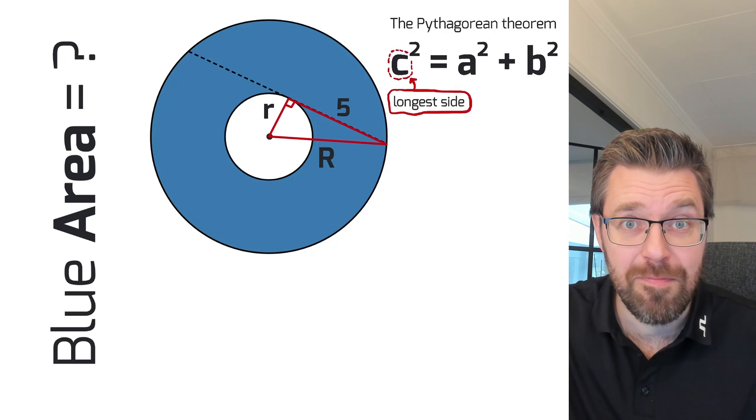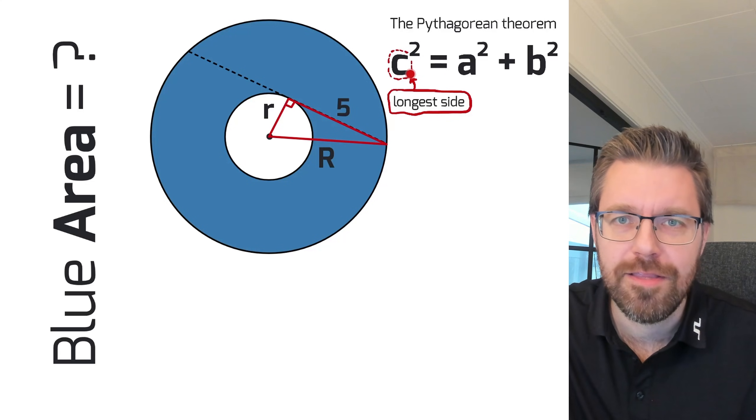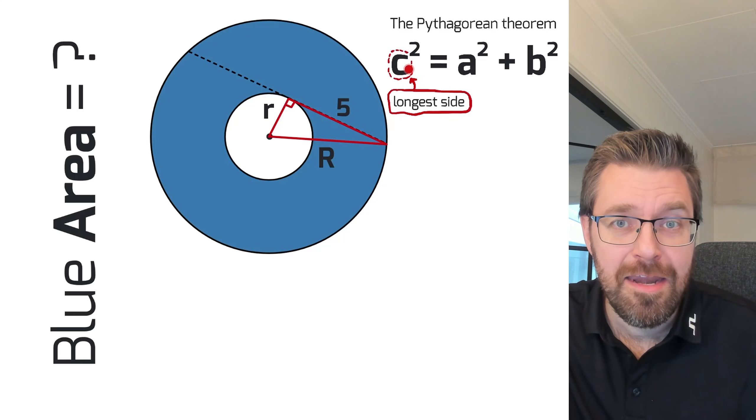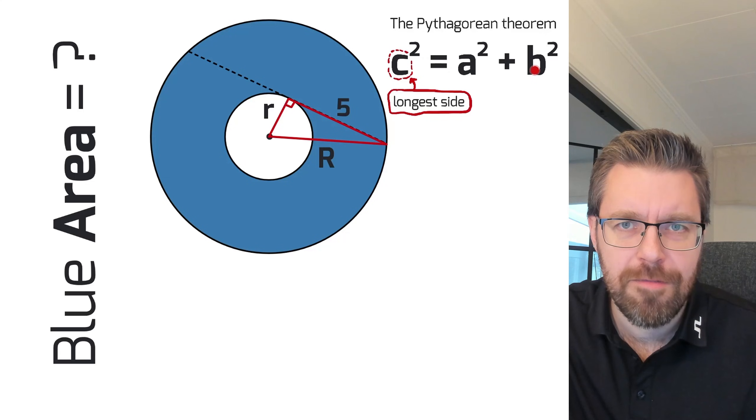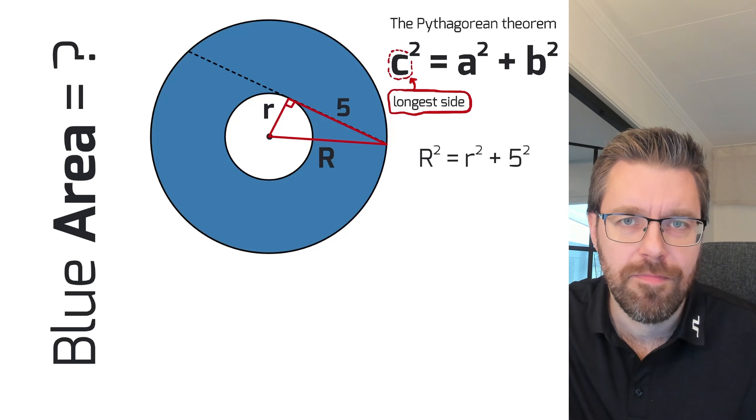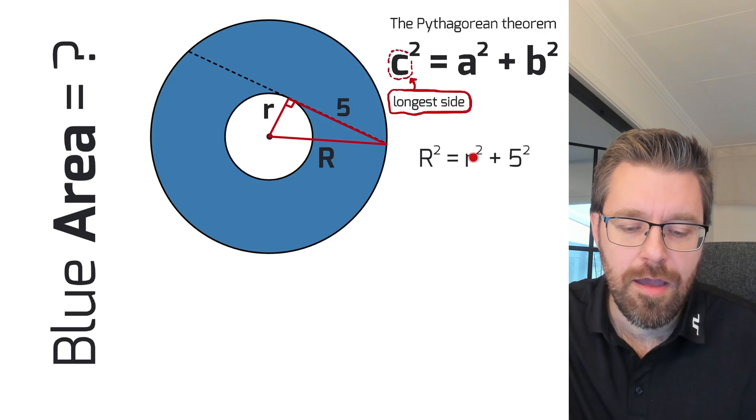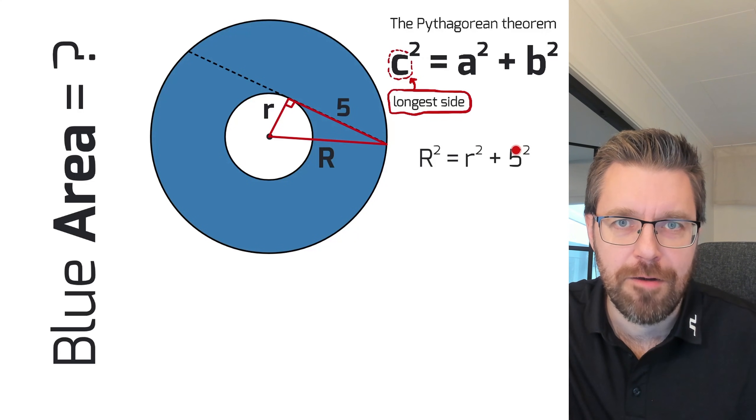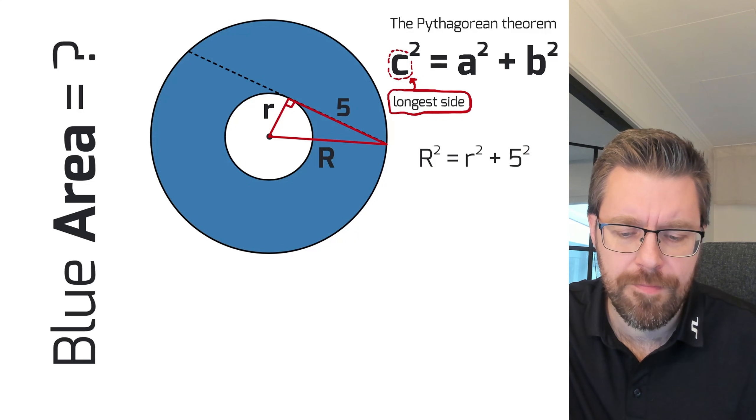It tells me that if we square the longest side, then it equals the sum of the squares of the two smaller sides. In our example, it means like this: square the big R, and it equals r² plus 5². 5² equals 25, so we can write it like this.